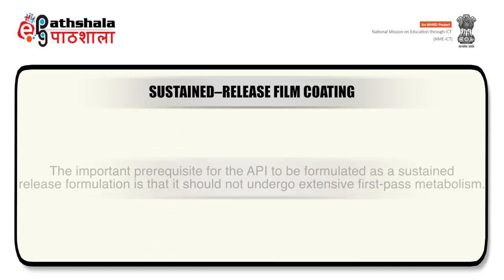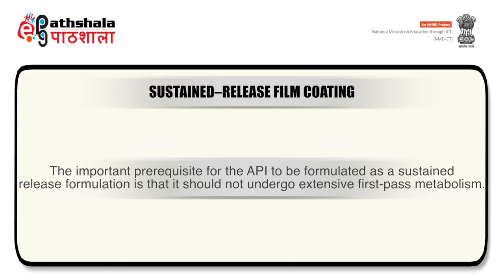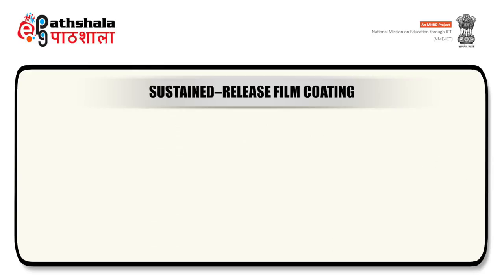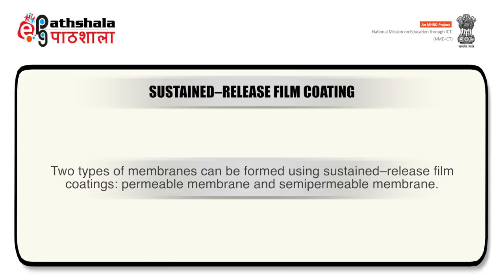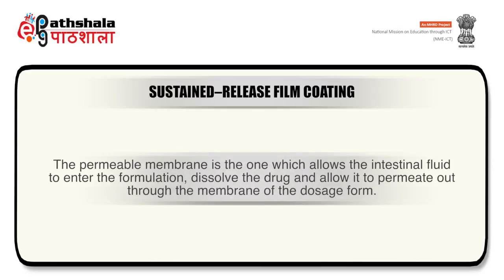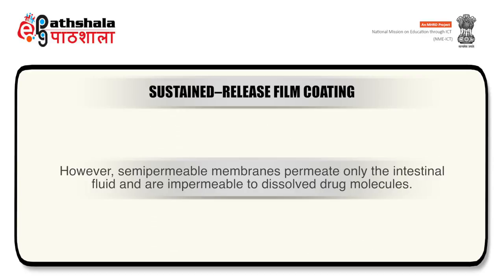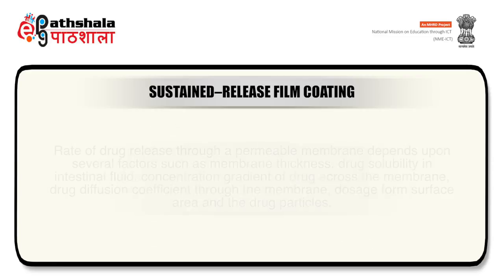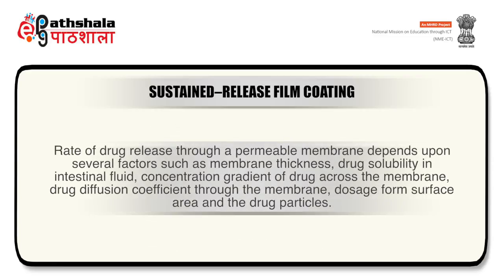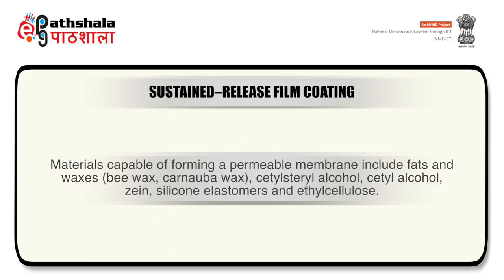Moving to sustained release film coatings: sustained release film coating can be applied to several dosage forms. The important prerequisite for the API to be formulated as a sustained release formulation is that it should not undergo extensive first-pass metabolism. Two types of membranes can be formed: permeable membrane and semi-permeable membrane. The permeable membrane allows intestinal fluid to enter the formulation, dissolves the drug, and allows it to permeate out through the membrane, being permeable to both intestinal fluid and drug molecules. Semi-permeable membranes permeate only intestinal fluid and are impermeable to dissolved drug molecules. Rate of drug release through a permeable membrane depends on membrane thickness, drug solubility in intestinal fluid, concentration gradient of drug across the membrane, drug diffusion coefficient through the membrane, and dosage form surface area.